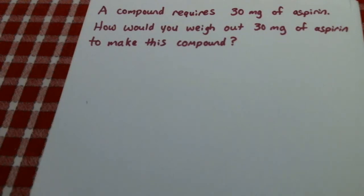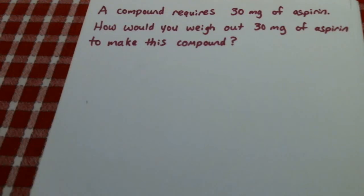In this video, we're going to talk about something that occurs quite a bit in compounding when we're trying to weigh small quantities of drugs or materials. In this example, we have a compound that requires 30 milligrams of aspirin. How are we going to weigh out those 30 milligrams of aspirin in order to make this compound?